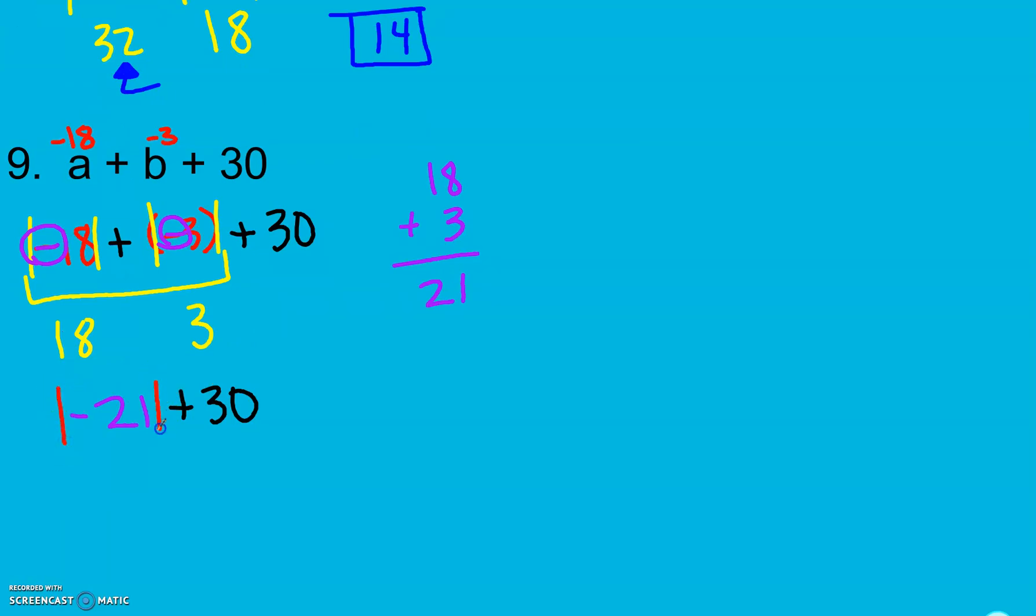Now we start again. Absolute value of negative 21 is 21. Absolute value of 30 is 30. Here though my signs were different, positive and negative. So we go ahead and subtract and find the difference.